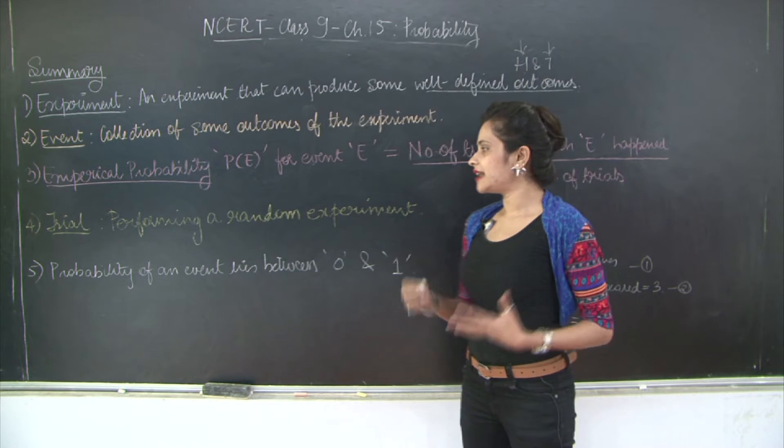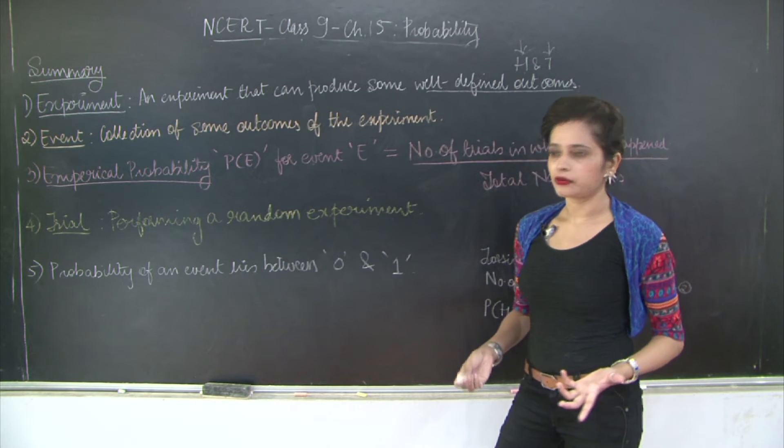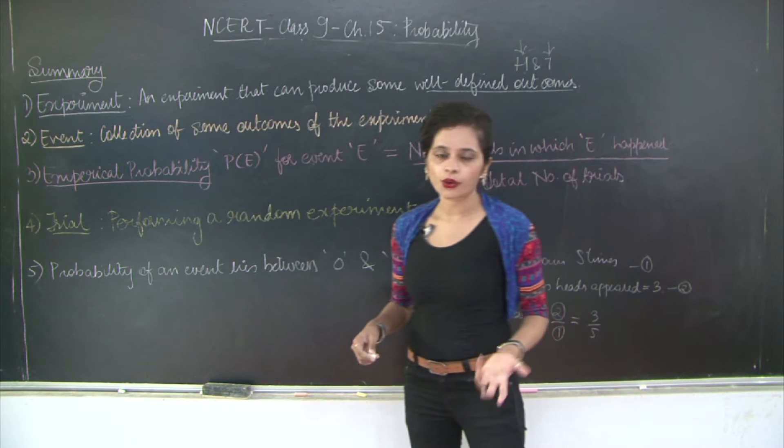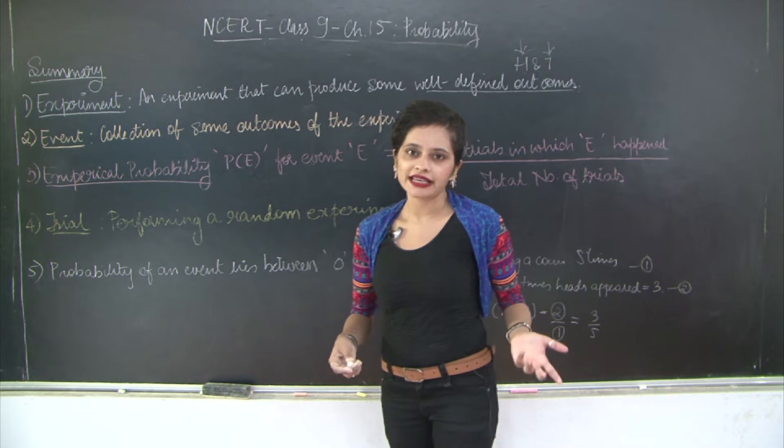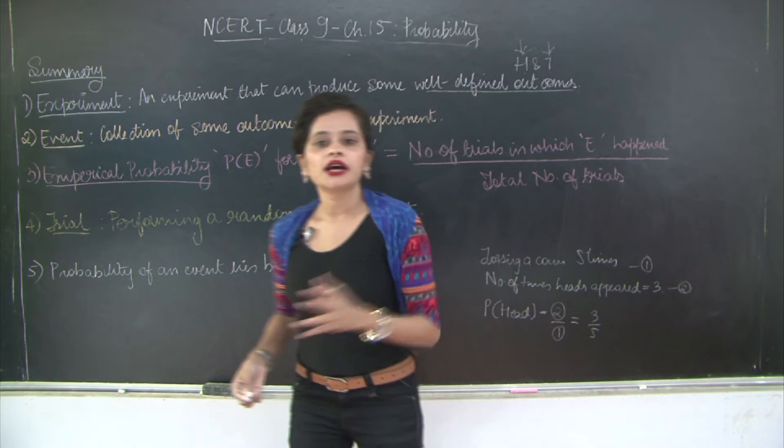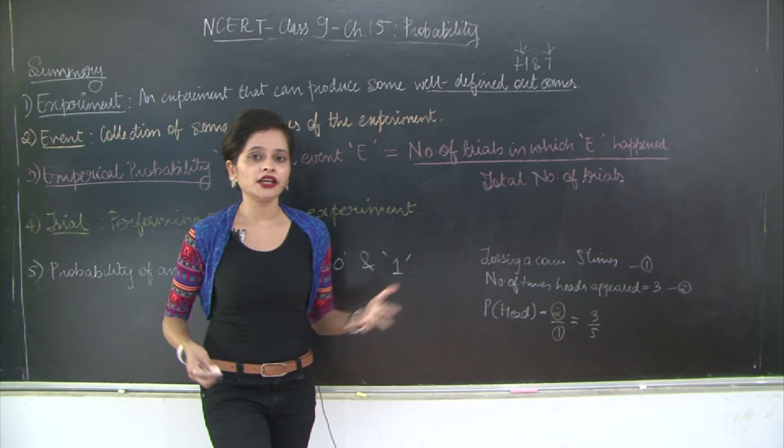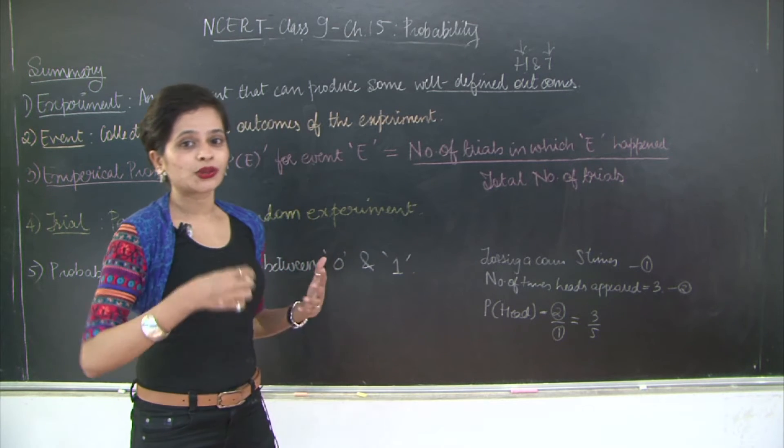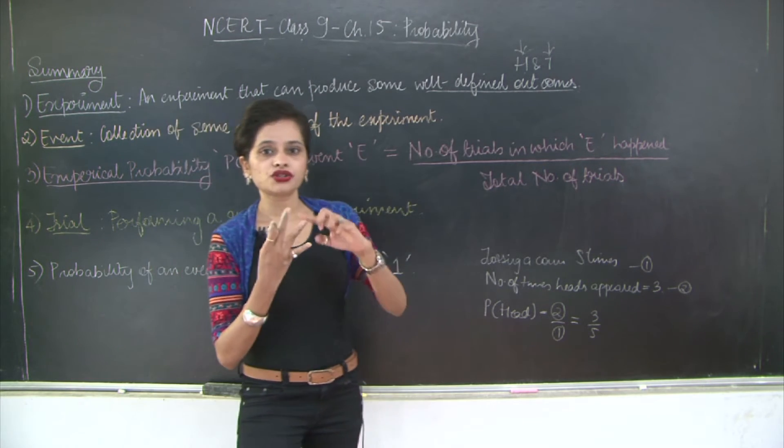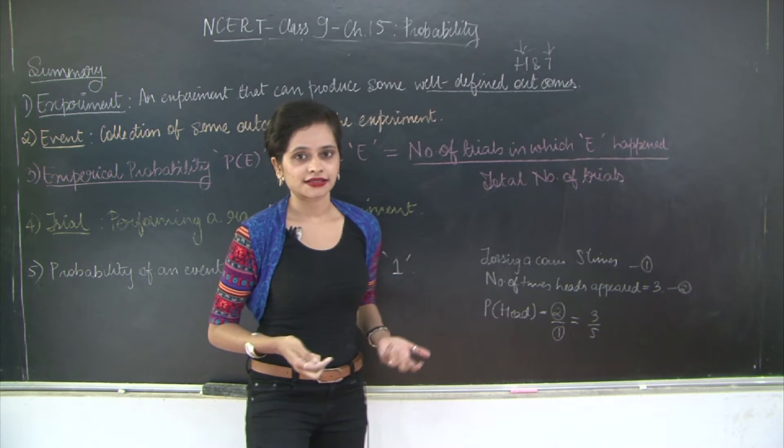Now trial is nothing but the act of performing a random experiment. Because you may not always toss a coin. Sometimes you would like to just throw a dice and the output that you would get would range from 1 to 6. So here again you're performing an experiment with well-defined outcomes: 1, 2, 3, 4, 5 or 6.